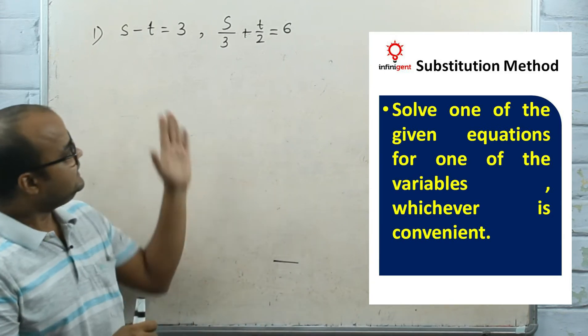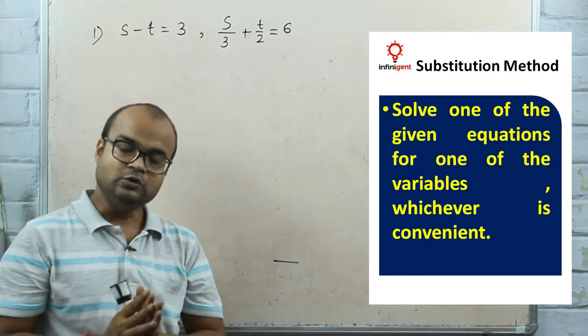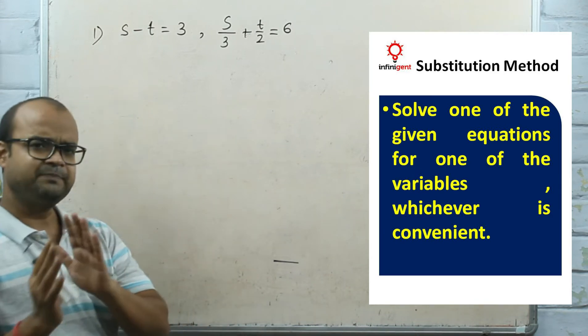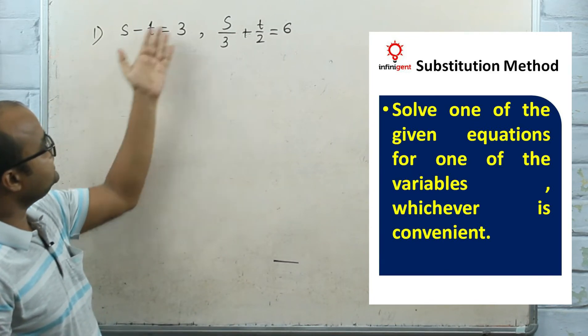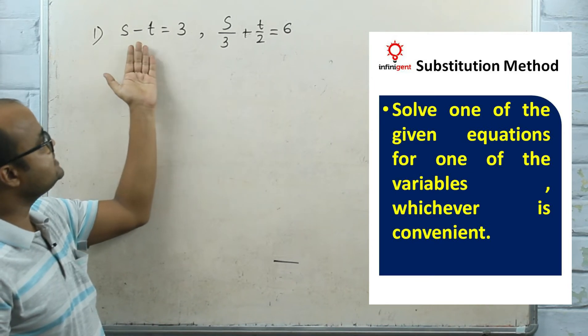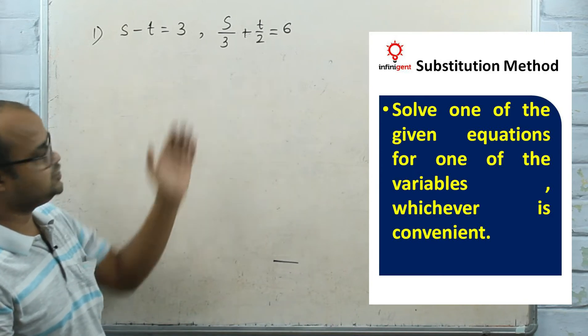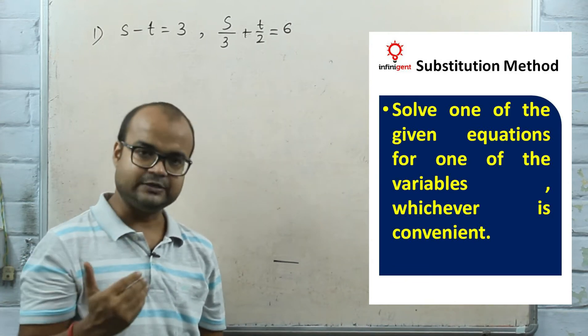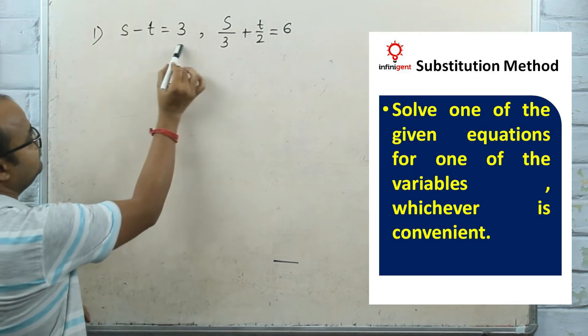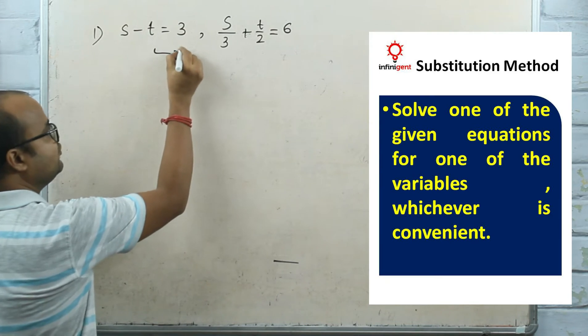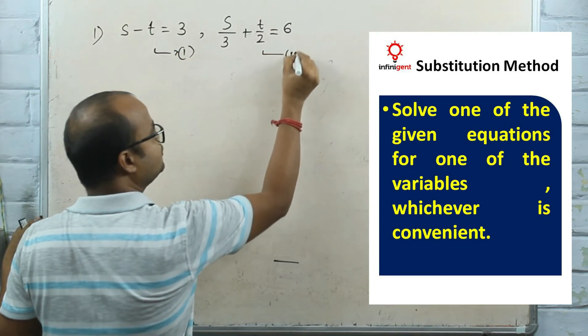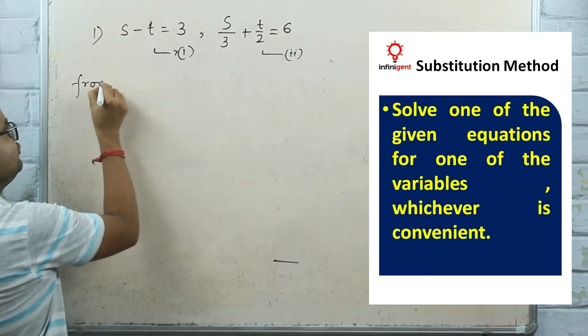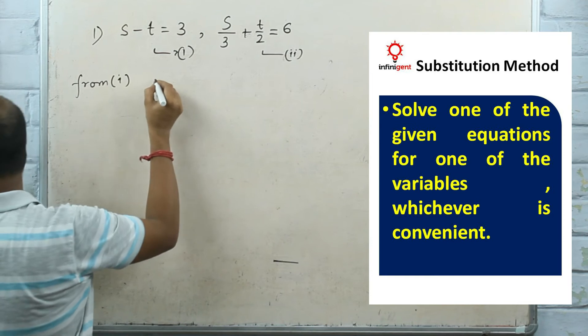You have two equations in terms of S and T. You can use any one of the equations to find the value of S or T, whichever is convenient. You can see here: this is equation 1 and this is equation 2. From equation 1, S equals 3 plus T.